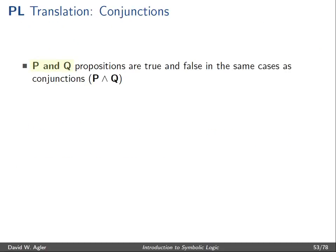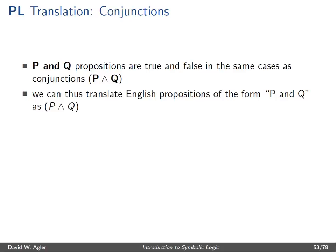Propositions of the form P and Q are true and false in the same cases as conjunctions in the language of propositional logic. If you need a refresher on this, you should check out the video on semantics posted on this channel. So we can translate English propositions of the form P and Q into the well-formed formula P wedge Q — that is, into conjunctions.